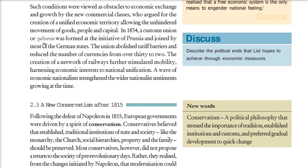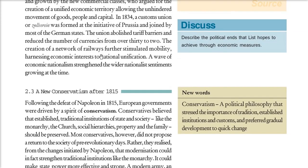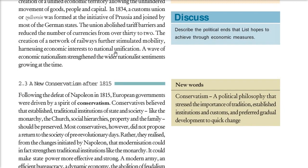Liberals understood these were obstacles. They wanted a unified economic area where the movement of goods, people, and capital would be smooth and unhindered. So in 1834, a customs union — the Zollverein — was formed at the initiative of Prussia and joined by most German states. They abolished traffic barriers, reduced the number of currencies from 30 to 2, and a network of railways enhanced mobility — creating the idea of national unification.